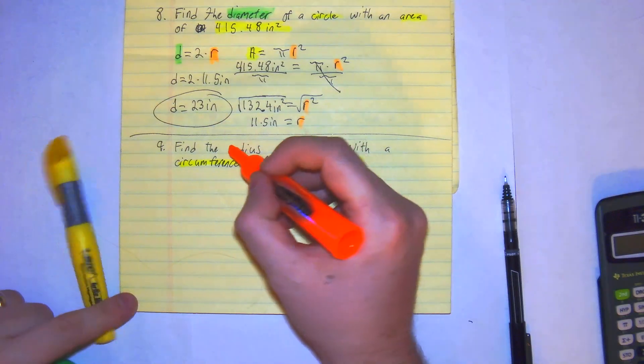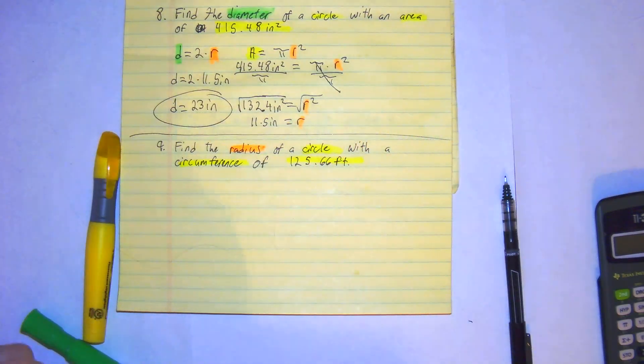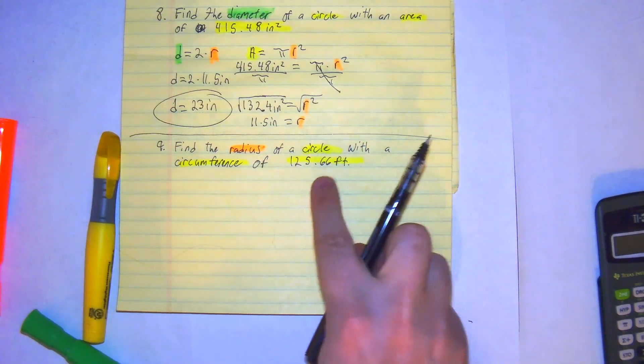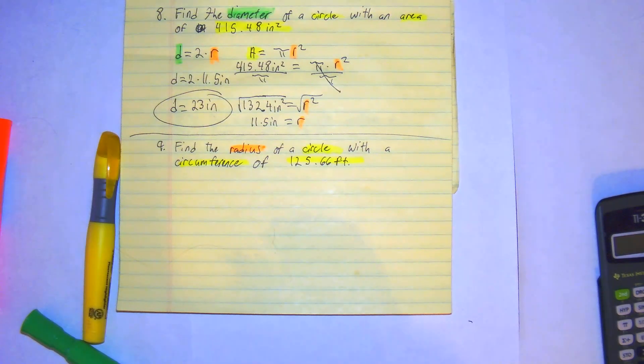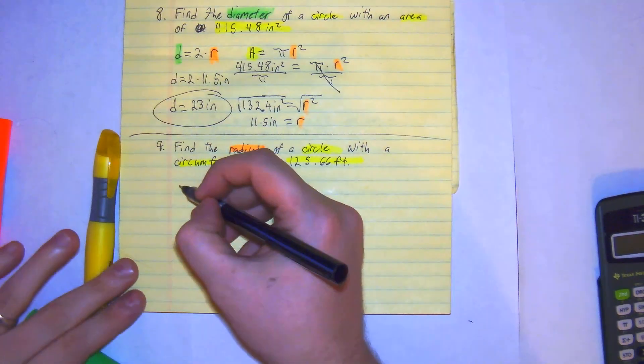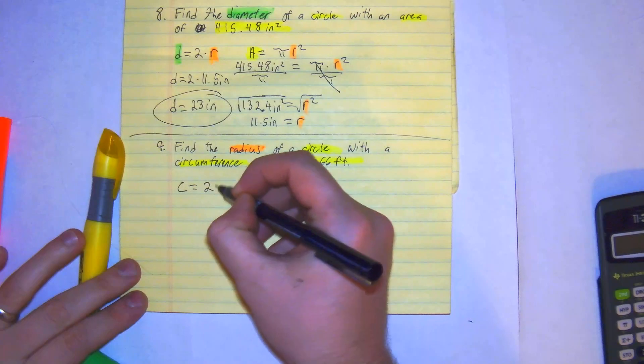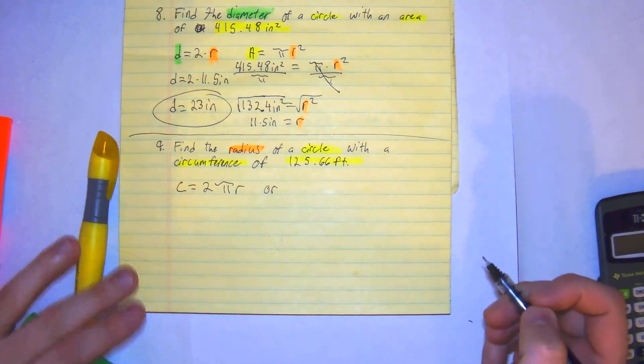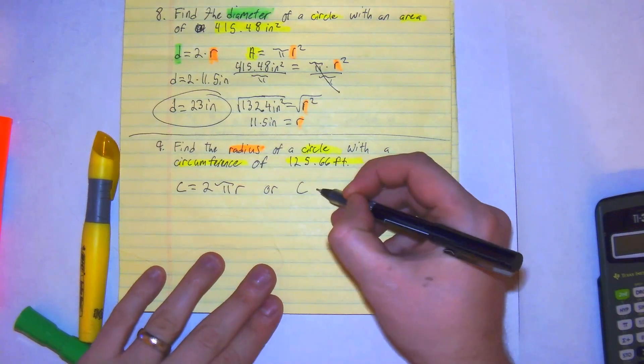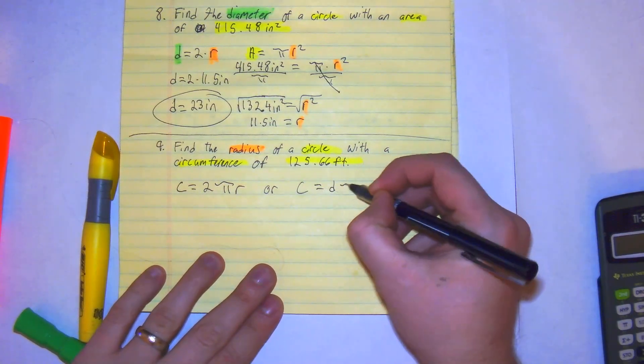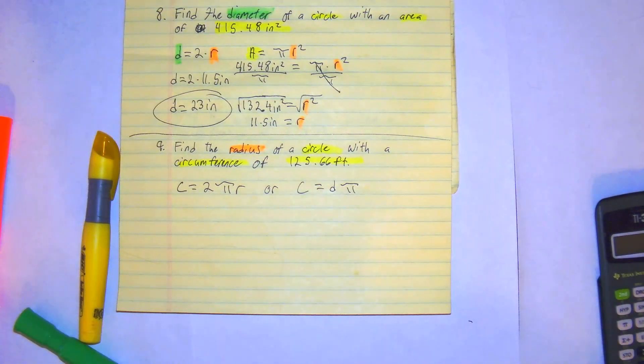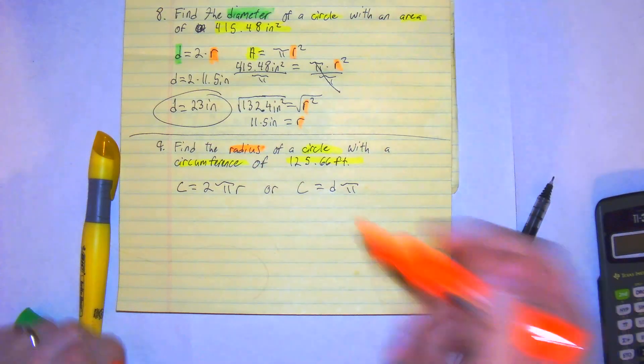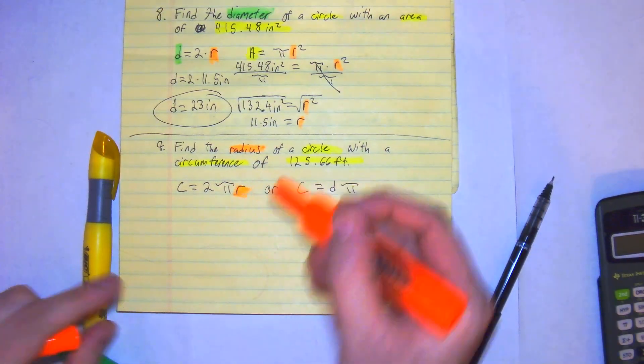The radius is what we're trying to find. So right here, we're trying to find the radius. We have two formulas: C equals 2πr, or C equals dπ, diameter times π. We're looking for the radius, so this will be our ticket to freedom.